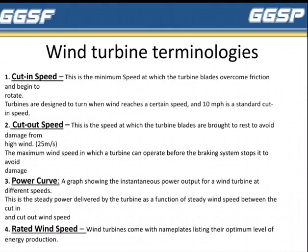Next is Power Curve — a graph showing the instantaneous power output for a wind turbine at different speeds. This is the steady power delivered by the turbine as a function of steady wind speed between the cut-in and cut-out wind speed.